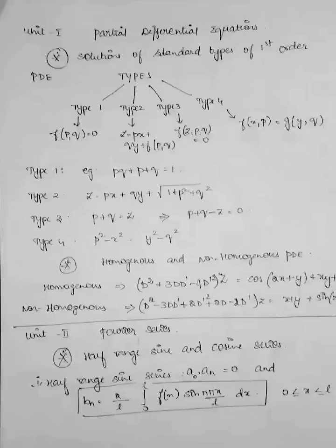Next, type 3. If the question is of the form f(z, p, q) = 0, then it is a type 3 sum. Type 4: f(x, p) = g(y, q). Here the example is p² - x² = y² - q². These are the type sums. So make sure you know this topic.